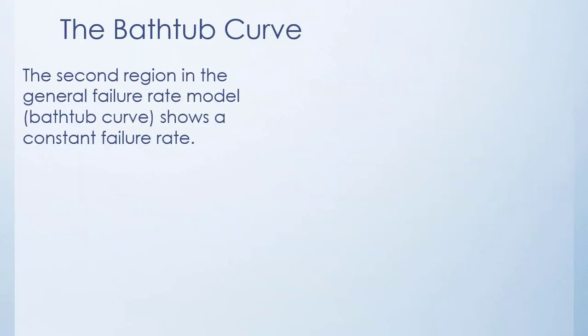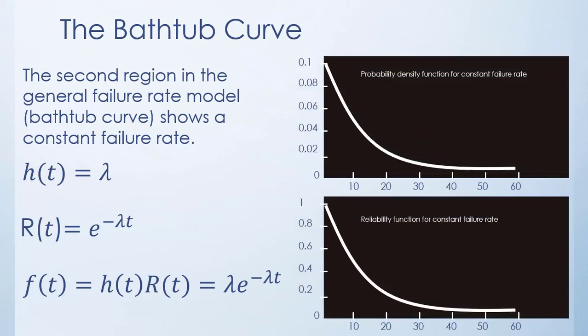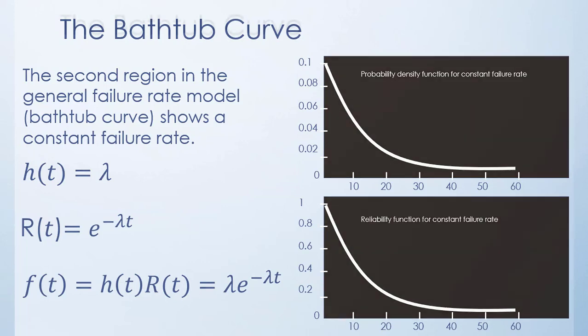The second region in the general failure rate model, the bathtub curve, shows a constant failure rate. Let lambda be the constant failure rate; thus, λ(t) = lambda. The reliability function and the probability density function are given as R(t) = e^(−λt) and f(t) = λ · e^(−λt). This is the standard exponential failure time distribution, and the graphs of these equations are obtained from actual failure data.